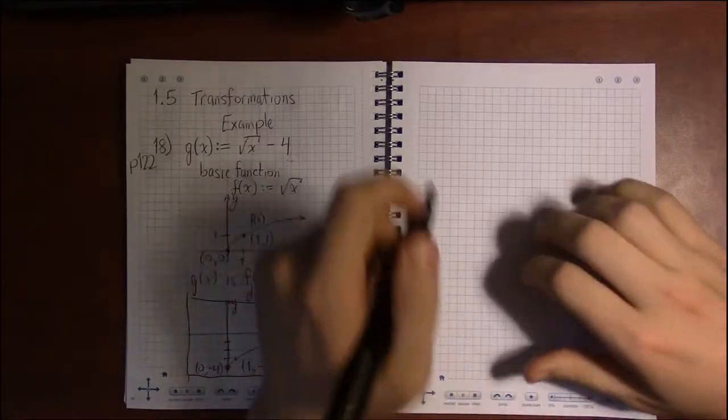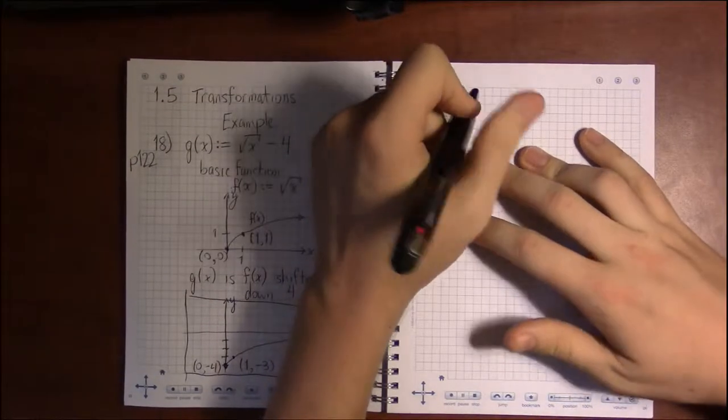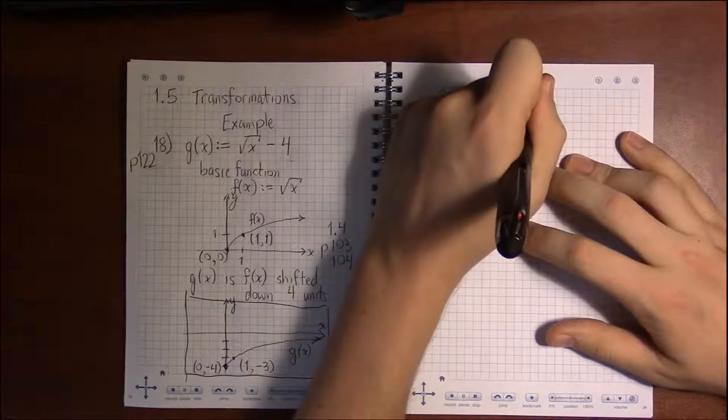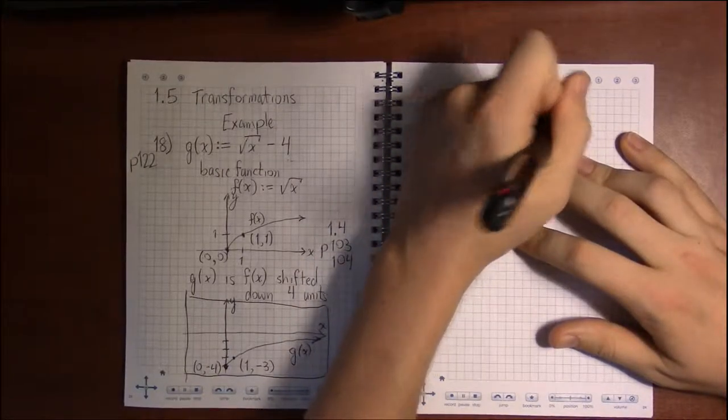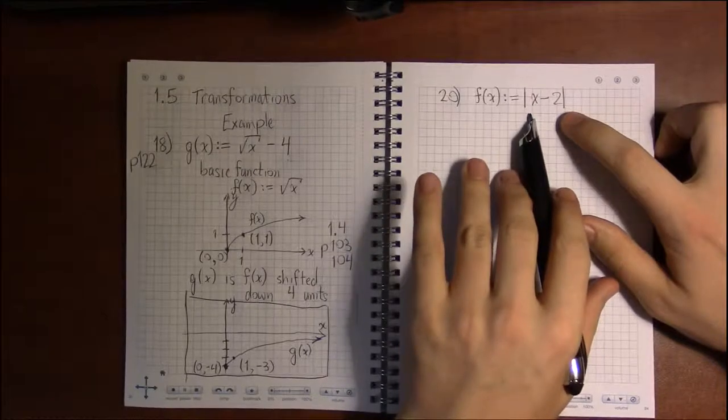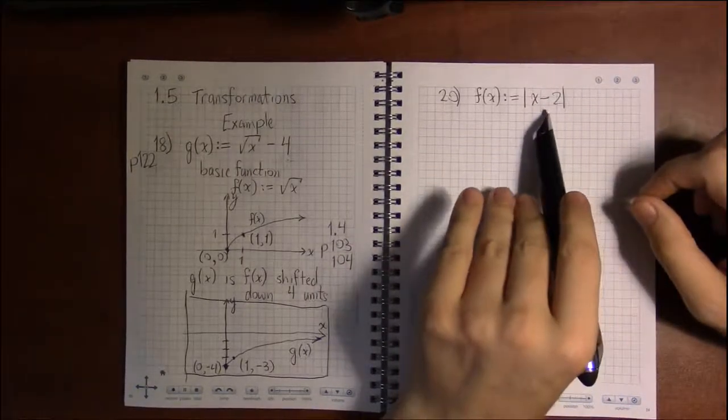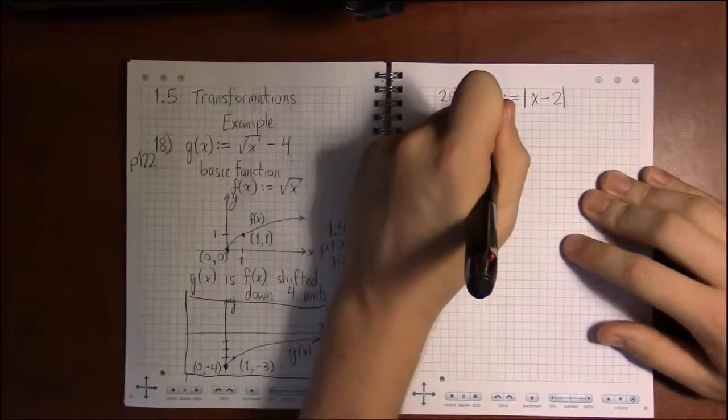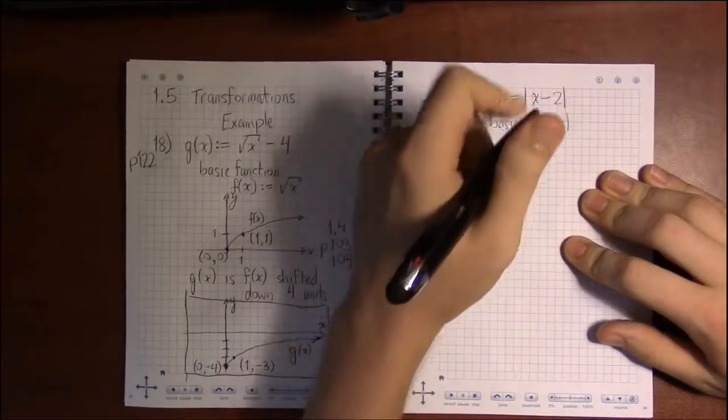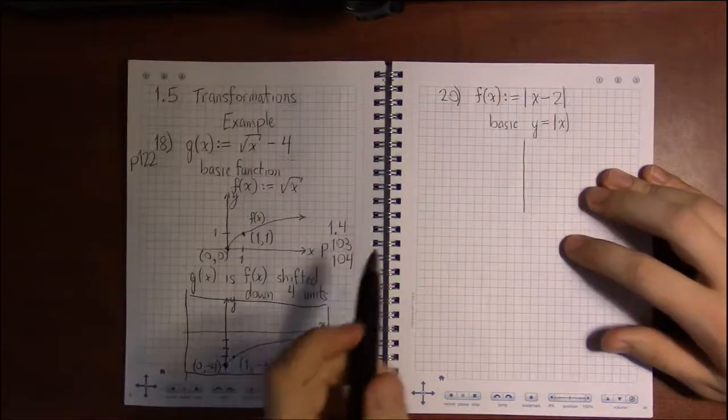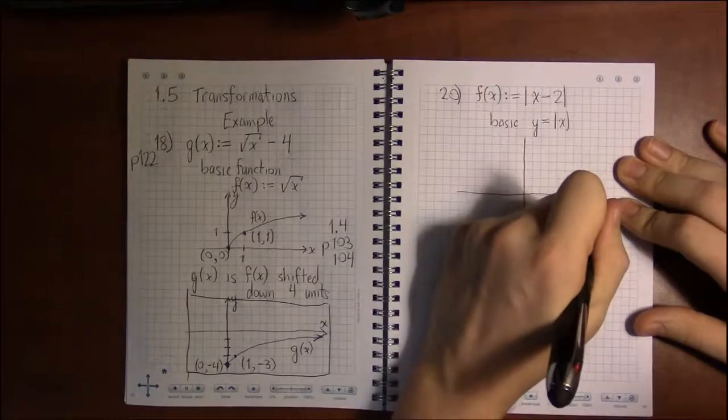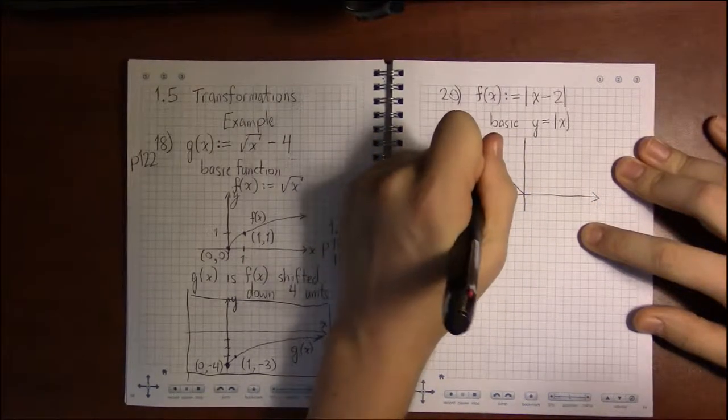It looks like the graph of square root of x, except g is shifted down 4 units. Let's take a look at 20. Here we're told that f should be defined as absolute value of x minus 2. The basic thing going on is the absolute value. The minus 2 is just a transformation. So the basic graph is y equals absolute value of x, which is just a v-shape.